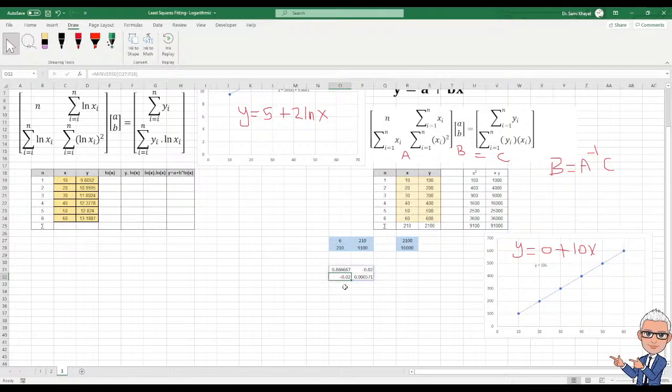If you are using here Office 365, if you are using the old one, he will give you only the first one. At that time what you need, you need to press, first you need to highlight, and then after that F2. And then after that you combine control shift enter. He will give you the data.